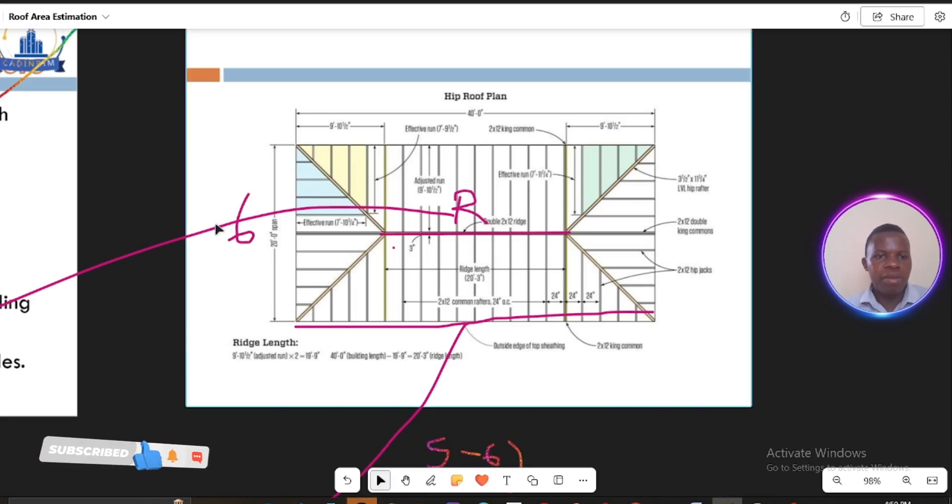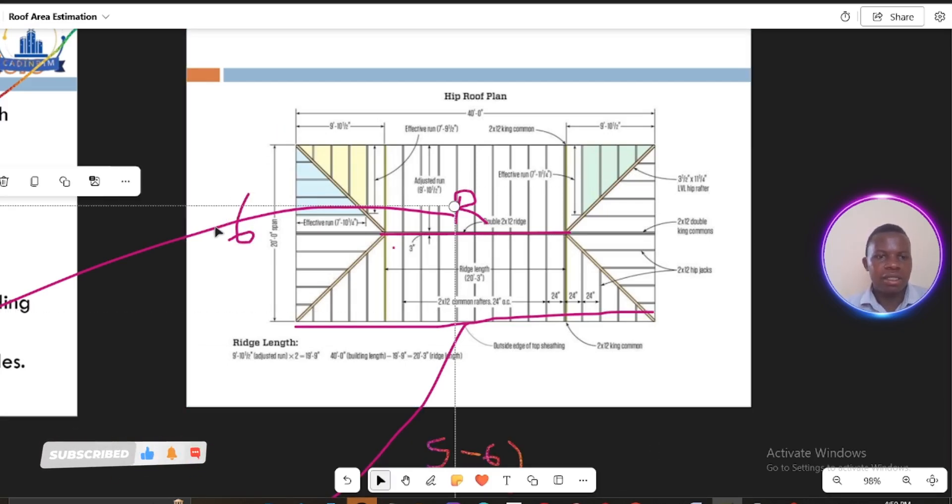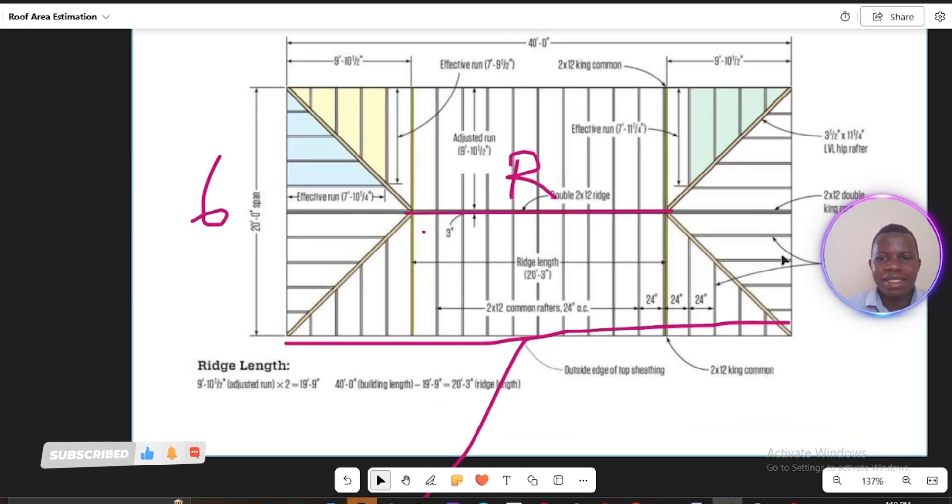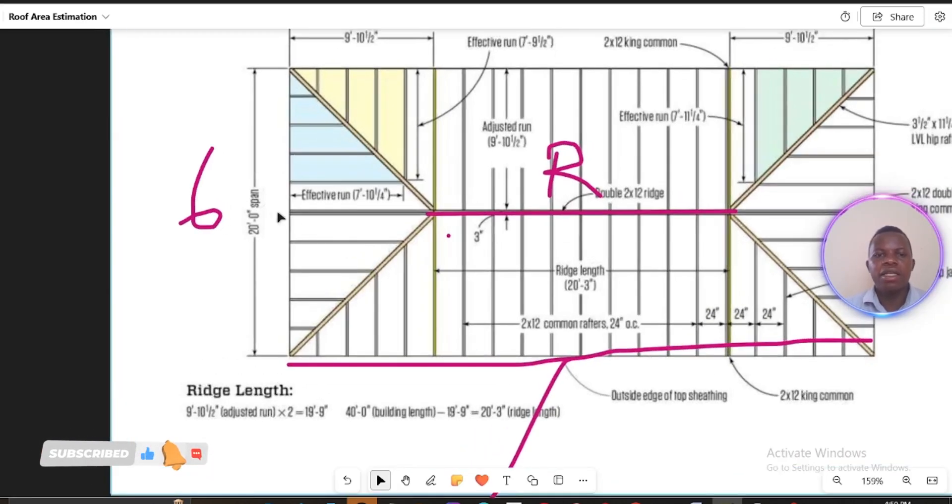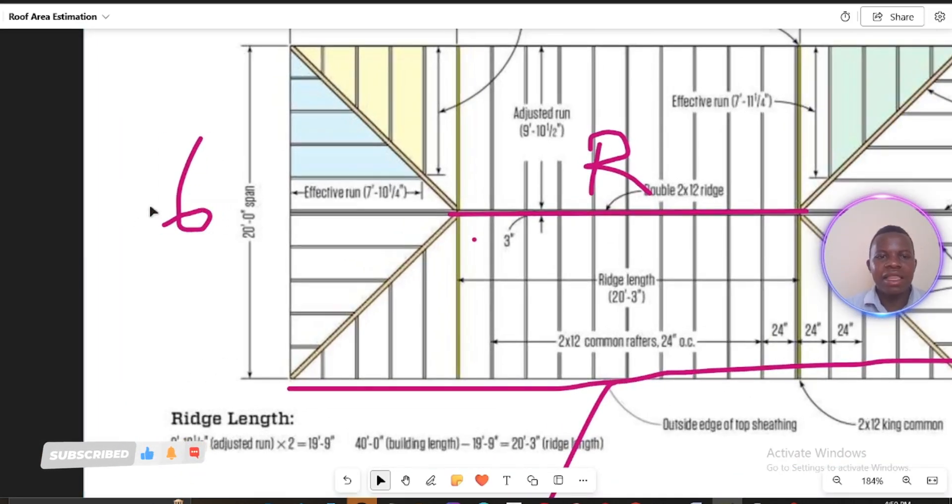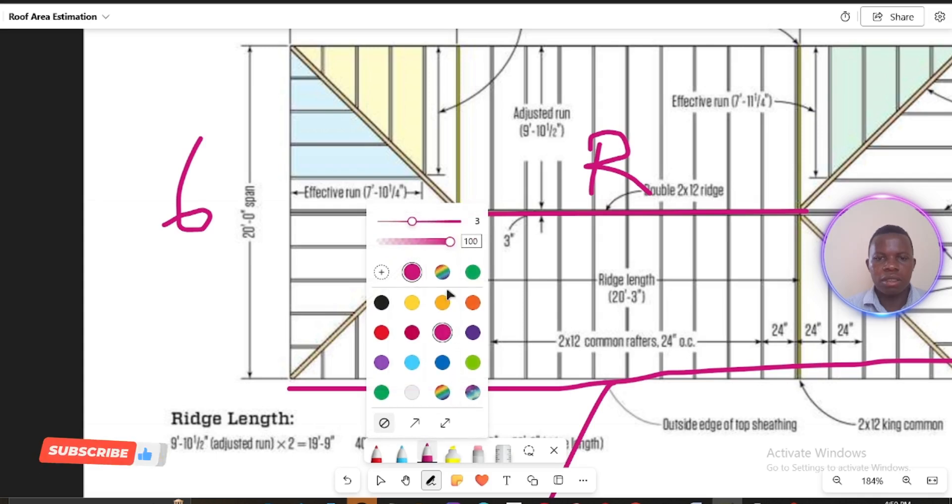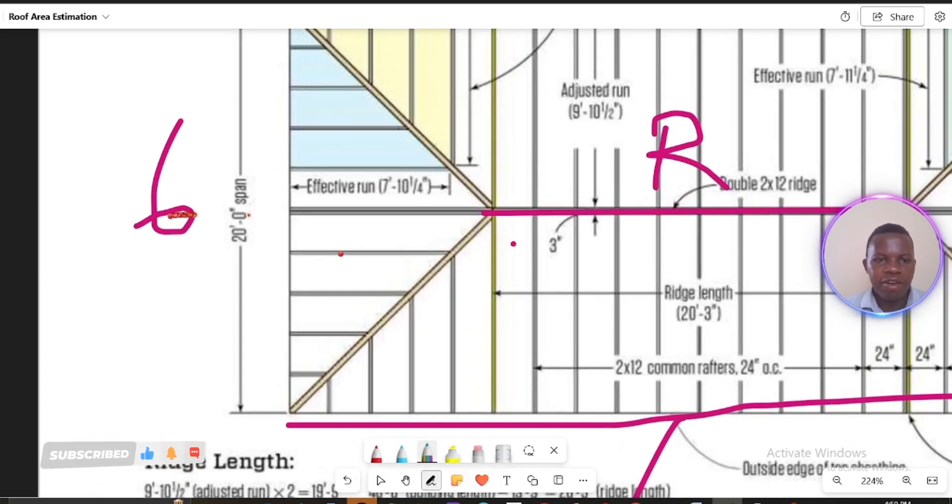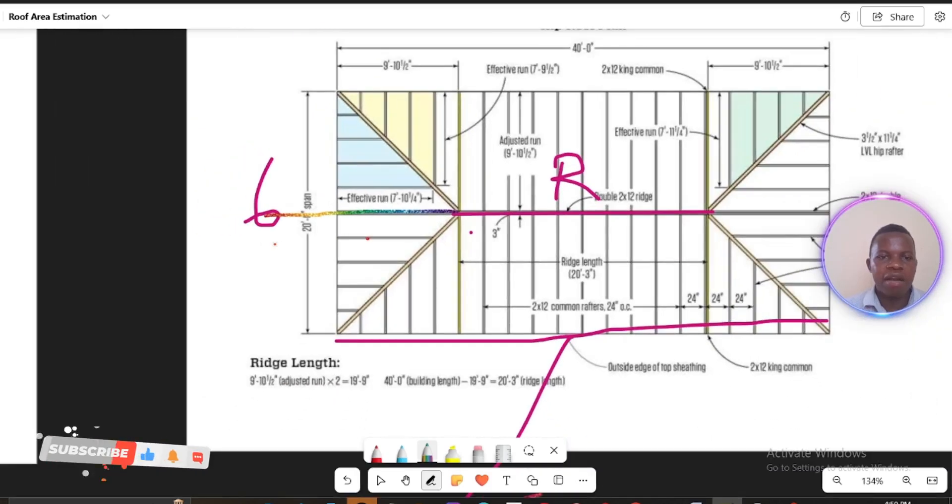To estimate that, we assume that this ridge cuts half the length of our width. So if our width is 6 and then if we cut by half, then we have to be having 3. So we'll be having half, if we cut this width by half, we have here 3 and also here 3 meters.